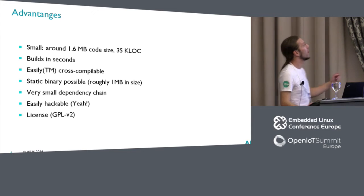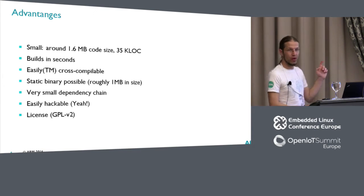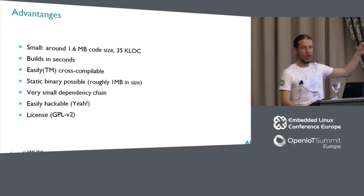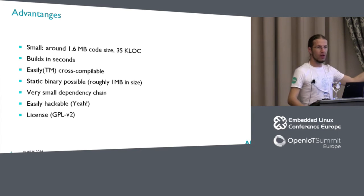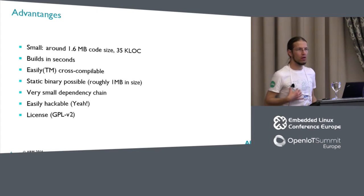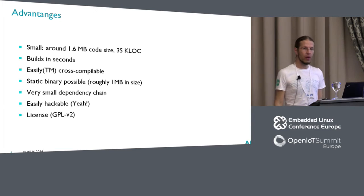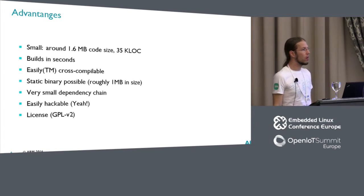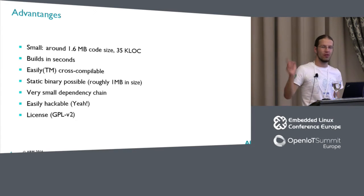Now on the plus side — KVM tool is really small. If you check out the archive, it's 1.6 megabytes. It's 35,000 lines of code according to my counting. And it builds very quickly — builds in seconds. And it's easily cross-compilable — easily, with a twist of course.